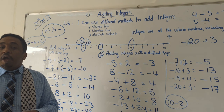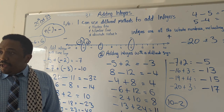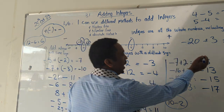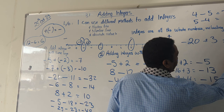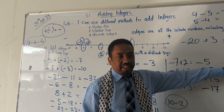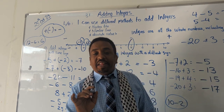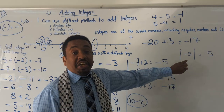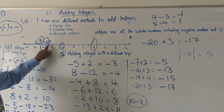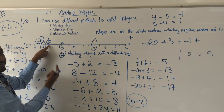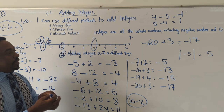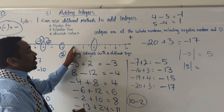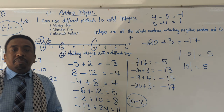You asked about absolute value. Absolute value is just a distance — the distance between a number and zero. This is how we write it: two vertical lines around the number. So the absolute value of negative 5 is 5, because the distance between negative 5 and zero is 5. Likewise, the absolute value of 5 is also 5, since the distance between 5 and zero is 5. We'll come back to this in another lesson.